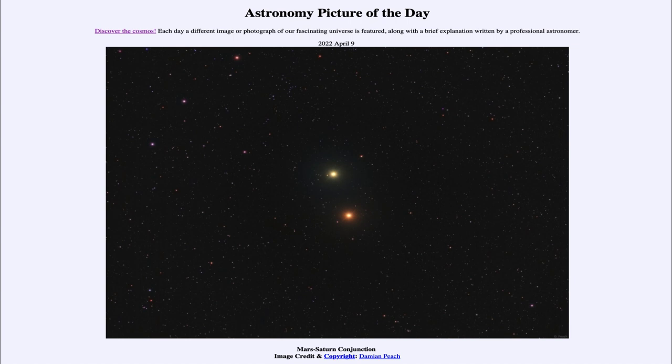It is titled Mars Saturn Conjunction. So what do we see here? We see two bright objects in the sky, actually two of the planets visible to ancient astronomers who knew of five planets in our solar system.